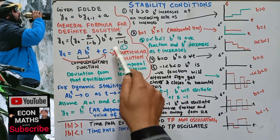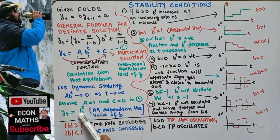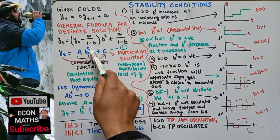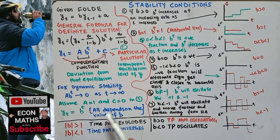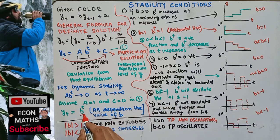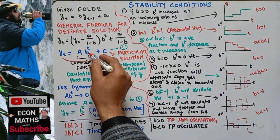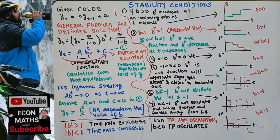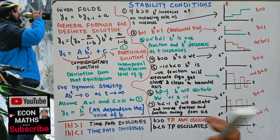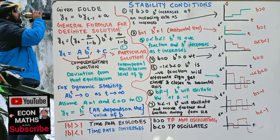Assuming A equals 1 and c equals 0, the equation becomes y_t equals b^t. All dependence on dynamic stability is on the value of b. This value of b can generate seven different kinds of time paths, as explained in these seven graphs.